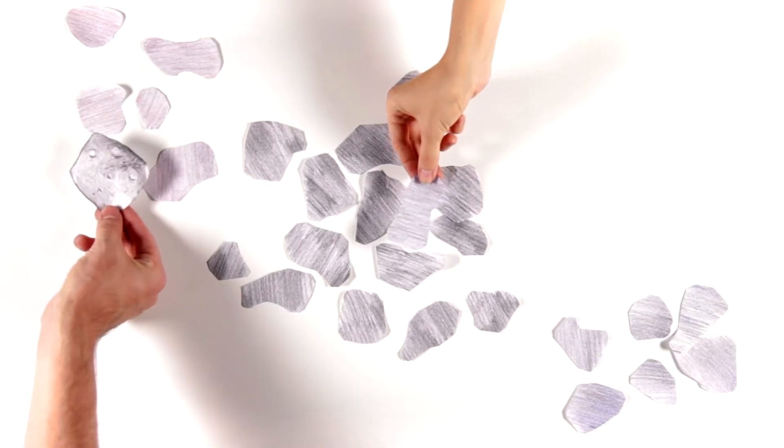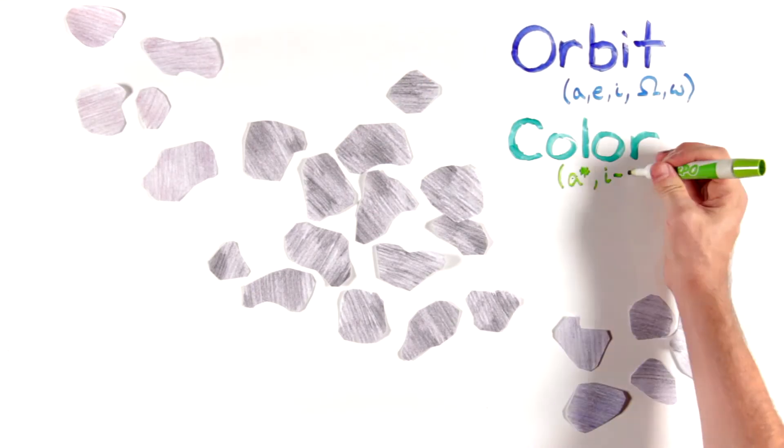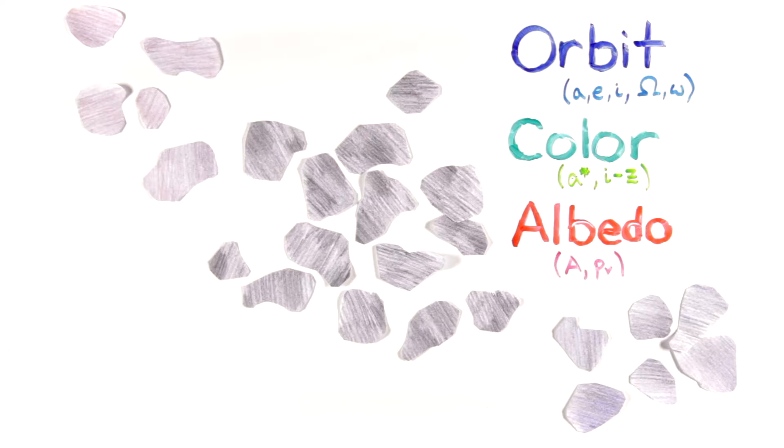Scientists tried to trace Bennu and other near-Earth objects back to their families by matching three main characteristics—orbit, color, and albedo, which measures surface brightness.